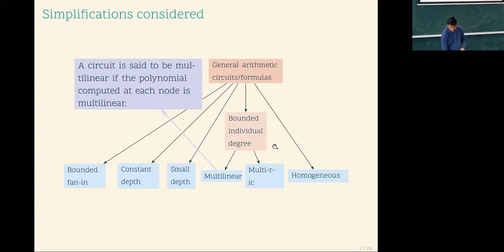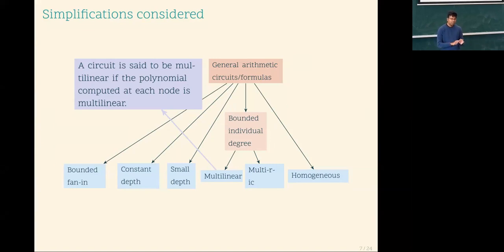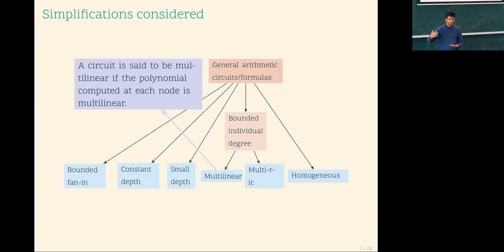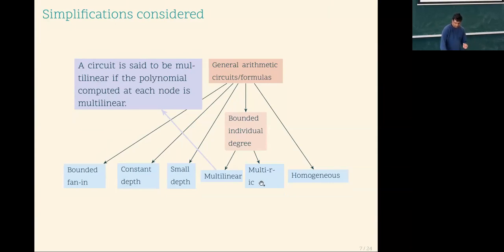Along with multilinear, there is multi-r-ic, which is a generalization. You can prove results when you bound individual degree to one; the next natural step is to go to multi-quadratic, where individual degree is at most two. The aim is to keep increasing the value of r to something as large as possible — weaken your constraint step by step. I have been on this bandwagon for the past four to five years and have some lower bounds in multi-r-ic circuits as well.